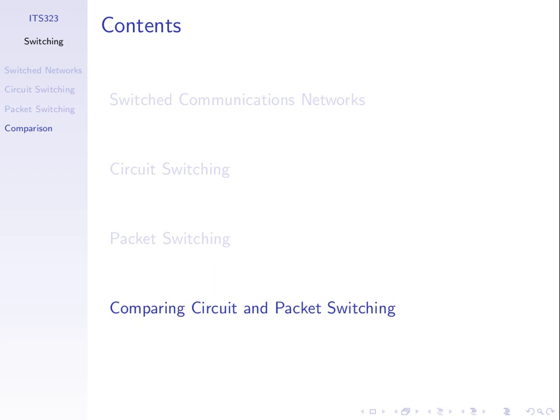For example with voice calls: say one link between switching nodes supports a capacity of 100 parallel voice calls. When I set up my connection, I reserve one unit of that capacity. When 100 people make voice calls using that same link, the capacity is reached. Even if I'm not talking on the phone — not sending data — that capacity is still allocated for my call. No one can take it away, no one can use it, even if I'm not using it.